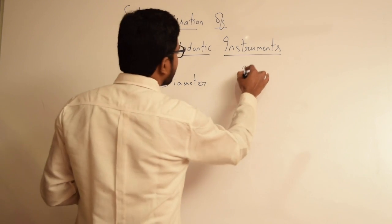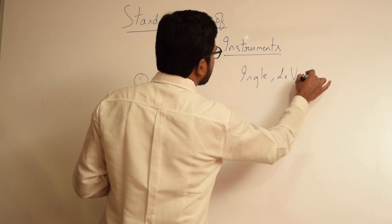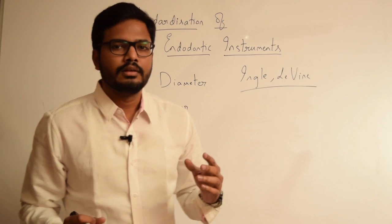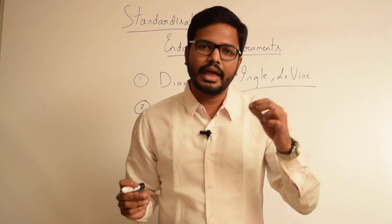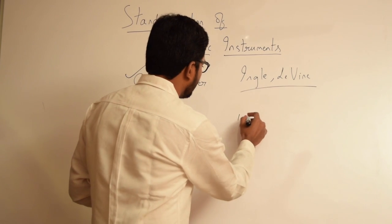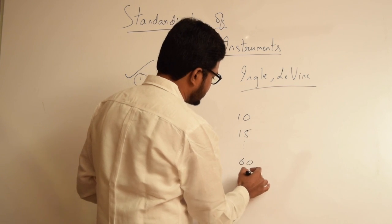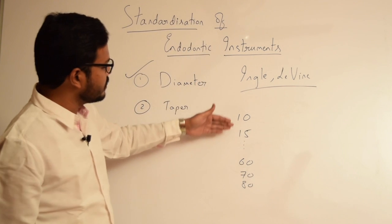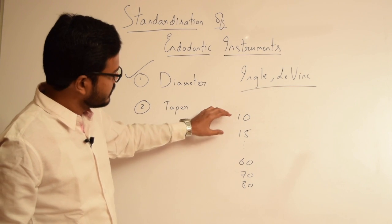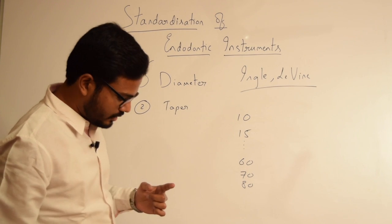So Engel and Levine proposed the standardization of endodontic instruments. According to them, there has to be a standard increment in diameter of any instrument as the size progresses. For example, we have a size 10 file, a size 15 file, and so on up to size 60, 70, and 80. The increment in diameter from size 10 to 15 is 5 units, and from size 60 to 70 is 10 units.